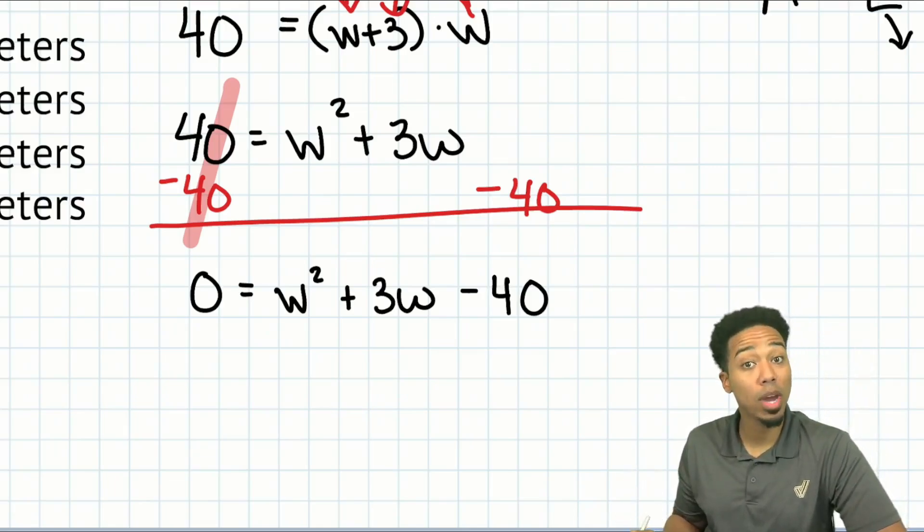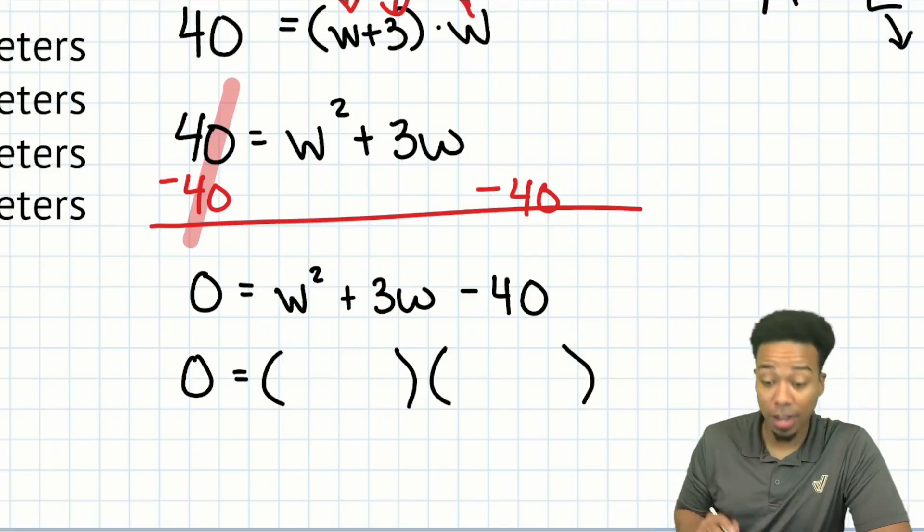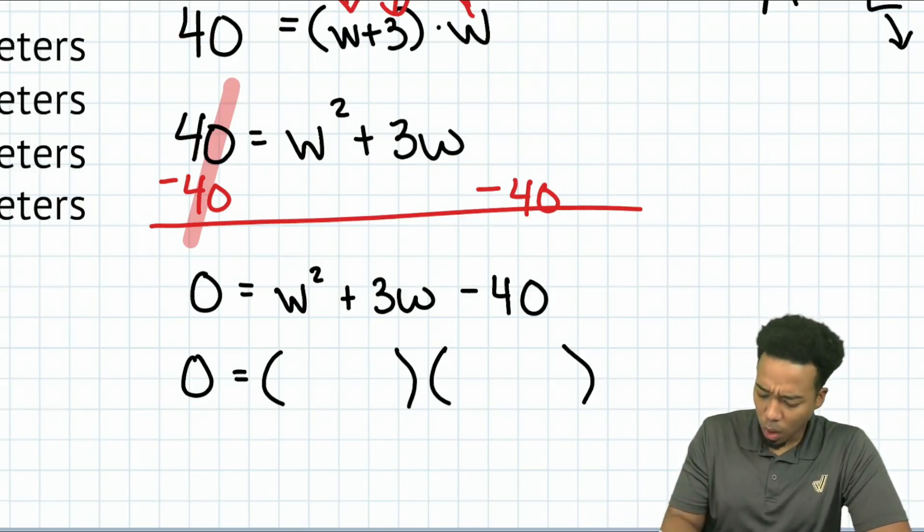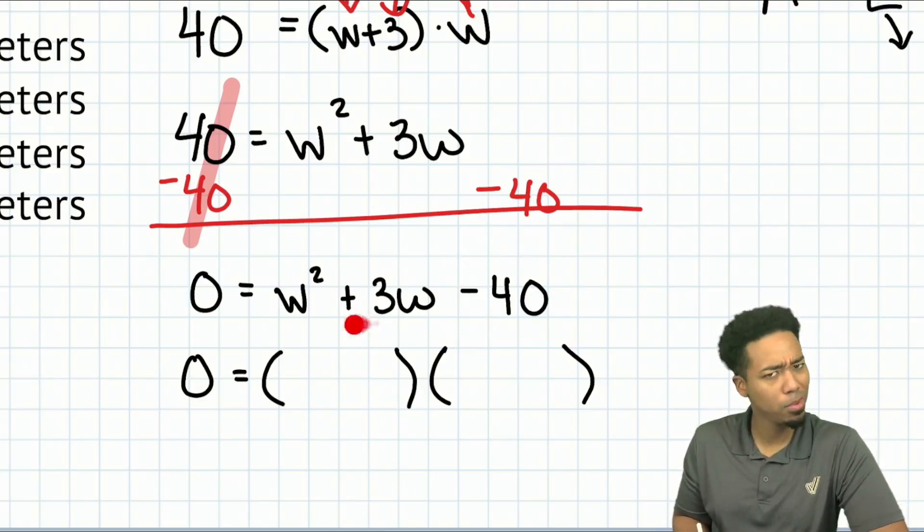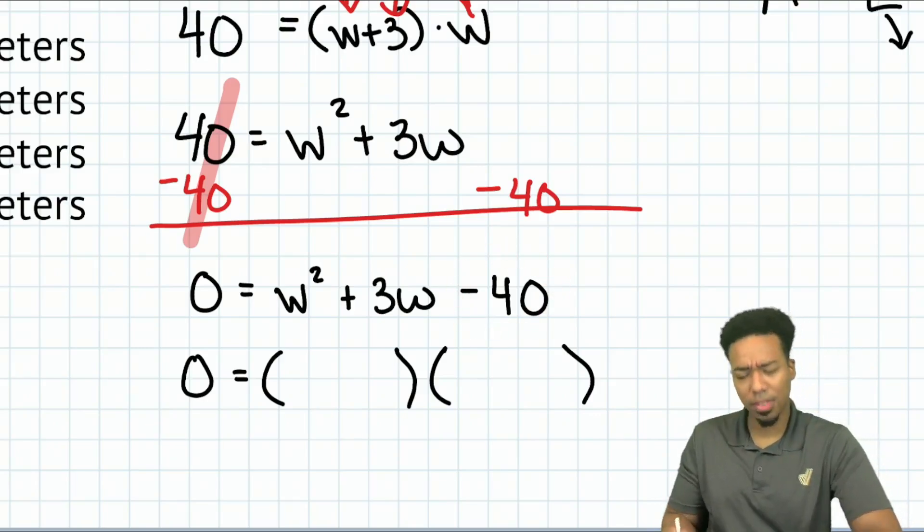From here, this is a polynomial equation. We have to figure out how to go from the full polynomial equation to the factored form. And to do that, all we have to ask ourselves is this, hey, what two numbers multiplied a negative 40, but add to positive three?